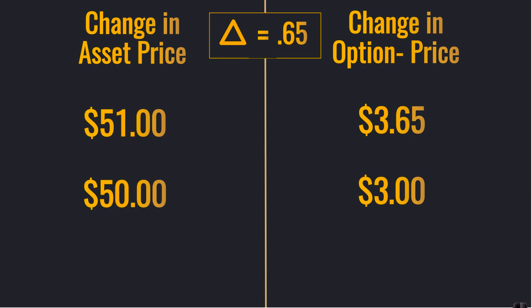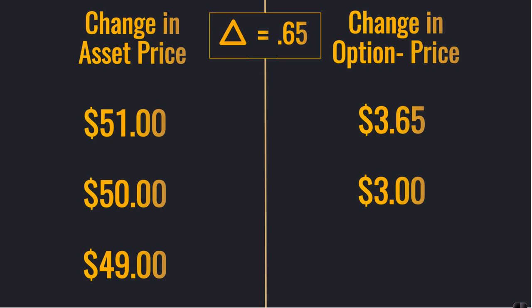If instead of rising, the asset price fell $1, and again that long call option had a Delta of positive 0.65, well that drop of a dollar means the option premium would go down 65 cents and the new option premium would be $2.35.